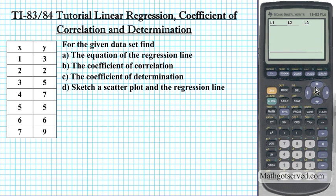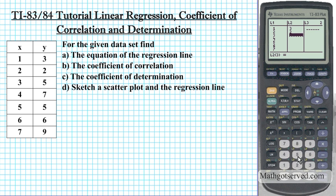So we have 7 rows in list 1. Now we're going to go to list 2 and populate it using these y values. So 3 is the first one — 3, enter, 2, enter, 5, enter, 7, enter, 5, enter, 6, enter, 9, enter.